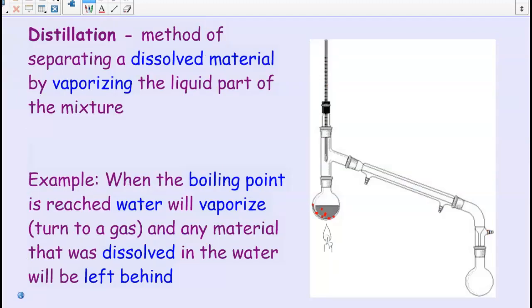Distillation is another method of separating materials. Distillation works well if you want to separate dissolved materials. Distillation uses the properties of the material that you are trying to separate. For example, the property of water is that it will boil at 100 degrees Celsius. Something like salt, for example, does not boil at 100 degrees Celsius - it remains a solid.